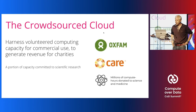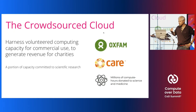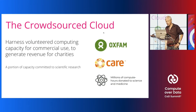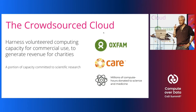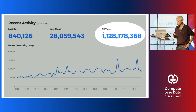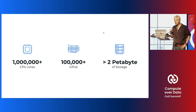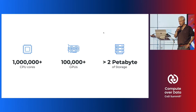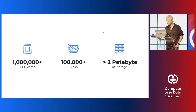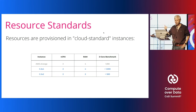We describe Charity Engine as a crowdsourced cloud service — volunteered computing capacity for commercial use — and we share the revenues with charities. We donate to Oxfam, Care, the Clean Water Fund, UNICEF, and a range of good causes. We also donate a percentage of our compute capacity to scientific research. As of a couple of days ago, we'd considerably exceeded a billion CPU core hours donated to scientific and medical research.